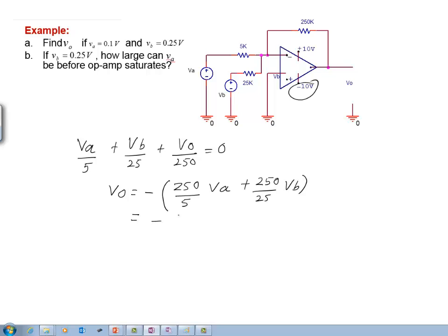Upon simplification, you get this is 50 times V A plus 10 times V sub B.